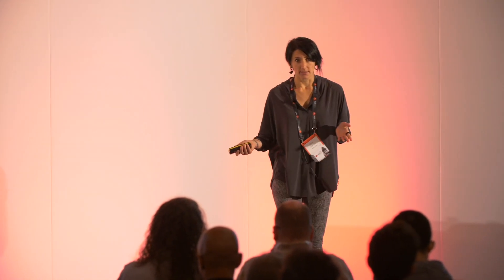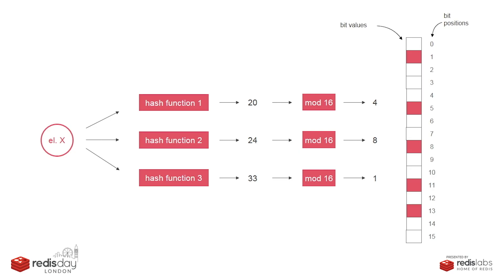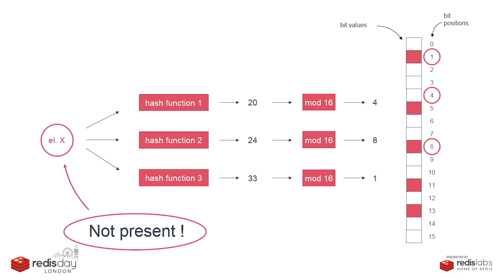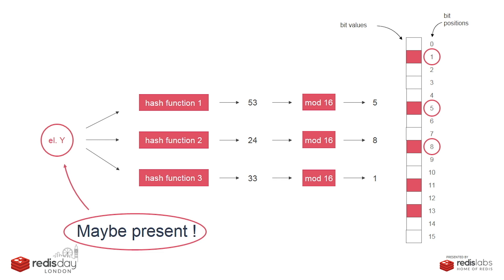How do we check for presence — how do we check if an element is in the set? That's the main test Bloom filters perform. For element X, we do the exact same process: we get the bit positions we want to check, and then we check if the bits in our bit array at those positions have been flipped. If at least one of the bits is zero, we can be sure that element has never been added to the Bloom filter — those are guaranteed negatives, definitely not present. If all the bits at those positions have been flipped, then we can say that element might be present in the set.